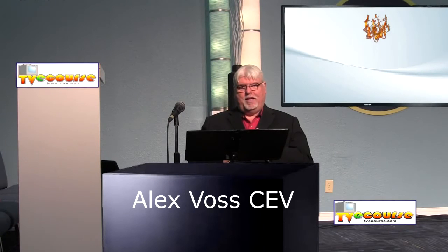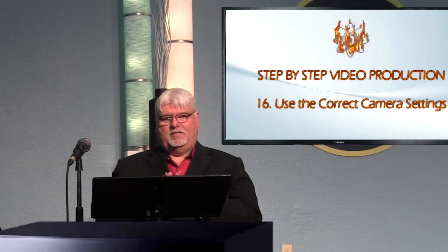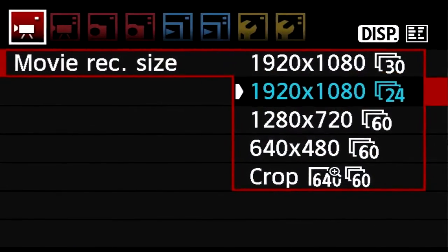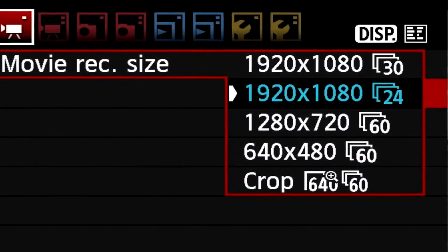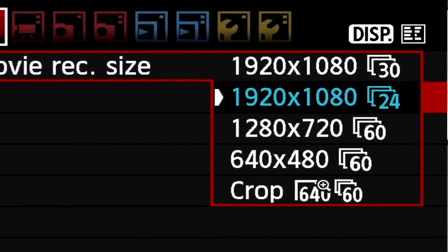Whenever you're setting up your cameras, it's always important to remember: what are you shooting for? Am I shooting for film? Am I shooting for television? Film rate and television rate are different. Film is 24 frames a second. Television is 30 frames a second.